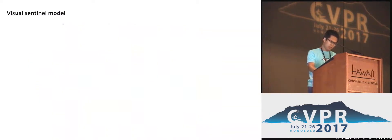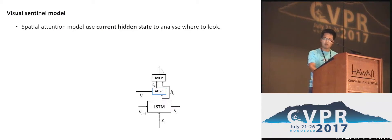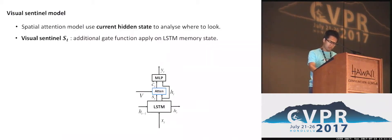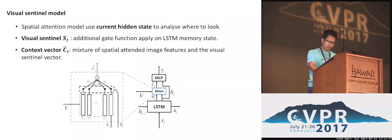More specifically, our spatial attention model uses the current hidden state to analyze where to look. The visual sentinel is an additional representation of the decoder's memory, providing a fallback option for the decoder. Thus, our new context vector is a mixture of the spatially attended image feature and the visual sentinel vector.